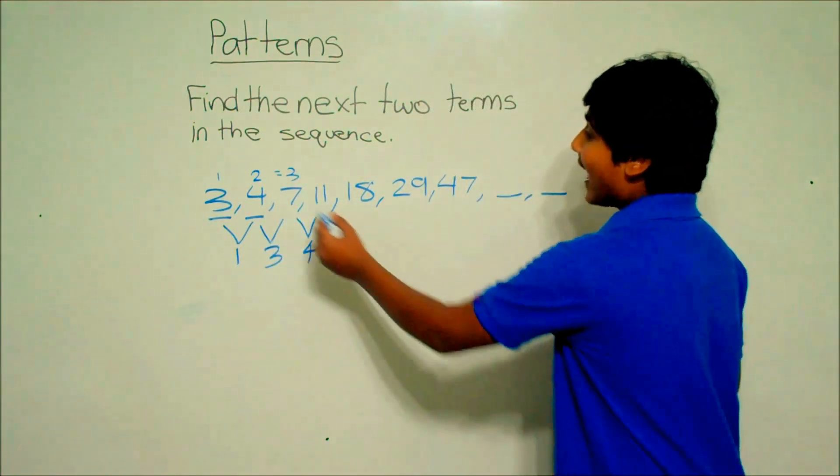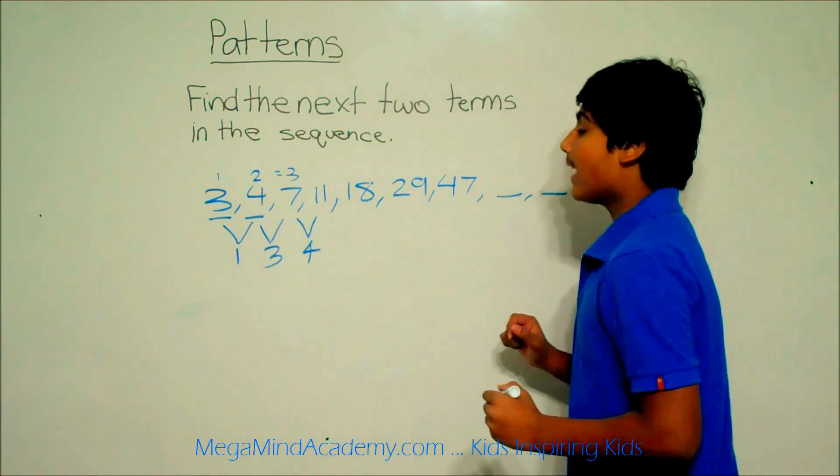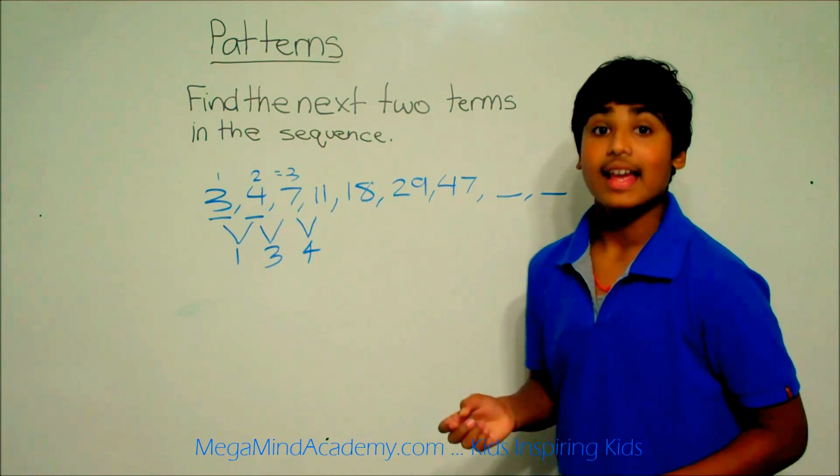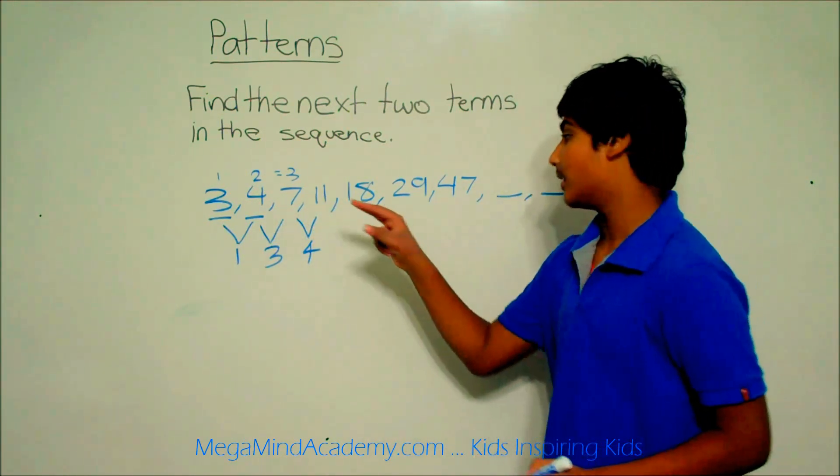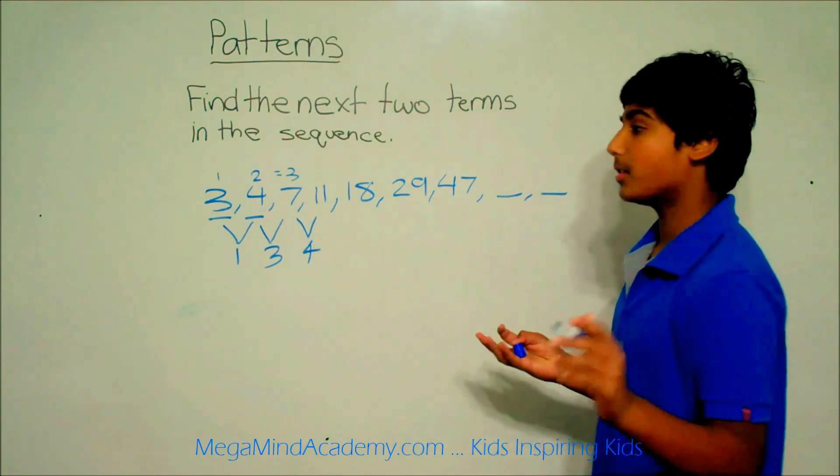If we add the second and third term, which is 4 and 7, that equals the fourth term, which is 11. So as you can see, the pattern is adding the two previous terms to make the next term. That is the pattern to this sequence.